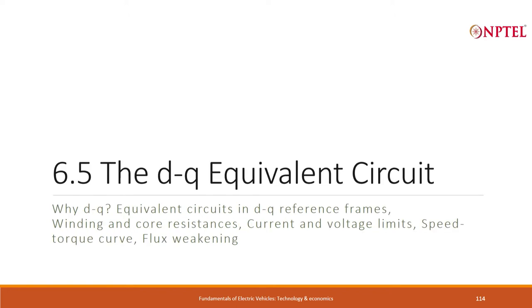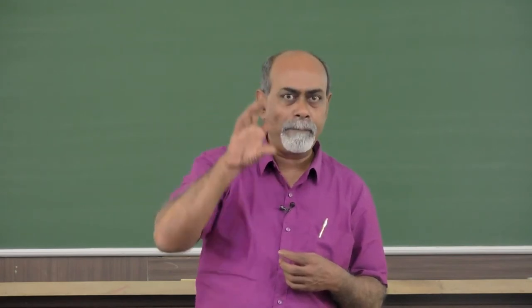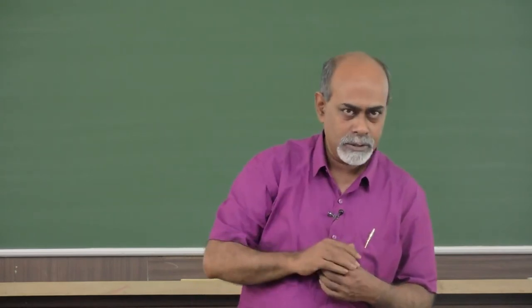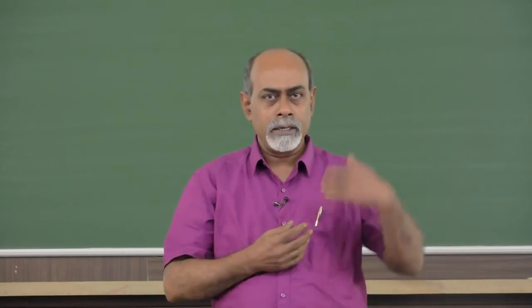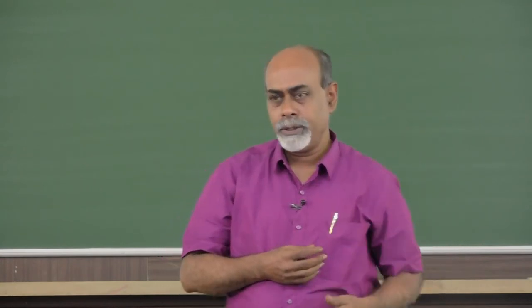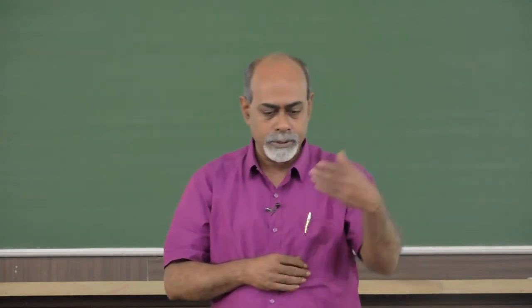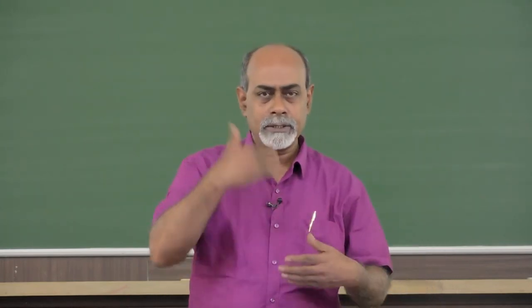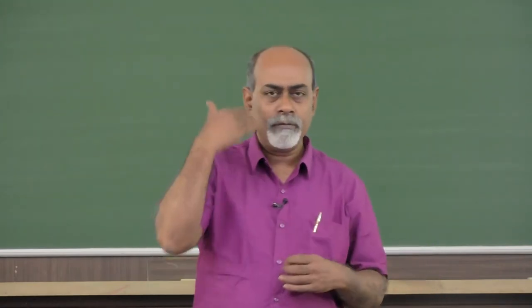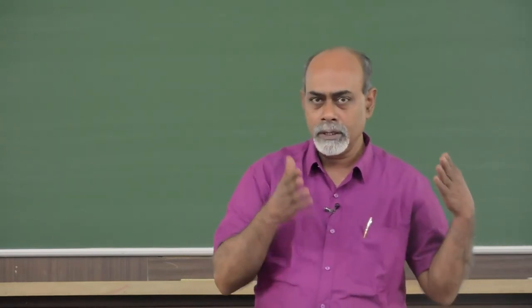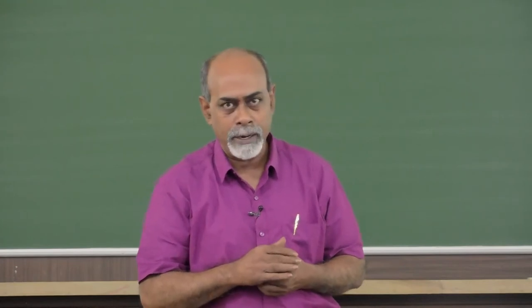Then we looked at what is called the DQ equivalent circuit, which helped us to draw the motor as if it were a pair of DC motors. DC is what we prefer because DC makes control easy. So we have one circuit diagram for the D axis and another for the Q axis, and the vector sum of the voltages in the two gives us a pair of voltage equations. The vector sum of the pair of voltages is the actual physical AC voltage being applied in the stator.